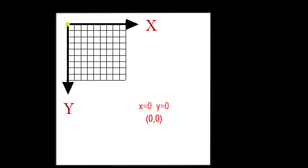As x increases it moves to the right, so if x moved to the right it would increase; if x moved to the left it would decrease. So if our x was 4 and our player moved to the left, the x would decrease by 1; if the player moved to the right the x would increase by 1. Same thing with y — at zero, if the player moved down the y would increase, and if the player moved back up the y would decrease.